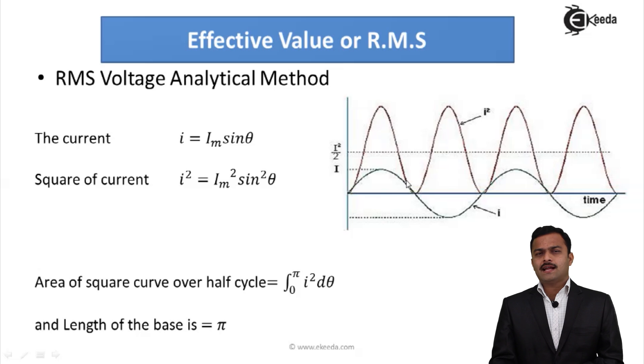So in this figure, I have shown I_m sin θ like this and squaring of it will be like this. What we are doing is considering the area under this curve which is nothing but integral 0 to π of I² dθ, and length of this is nothing but π because we are just considering half cycle.